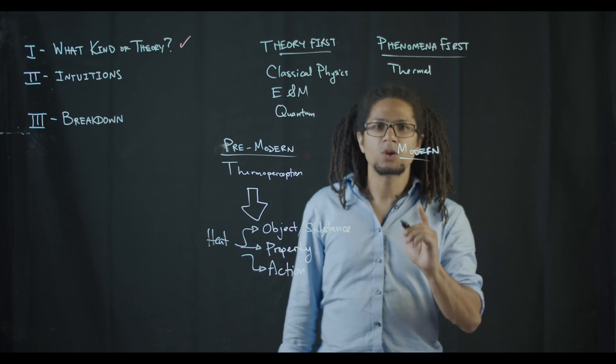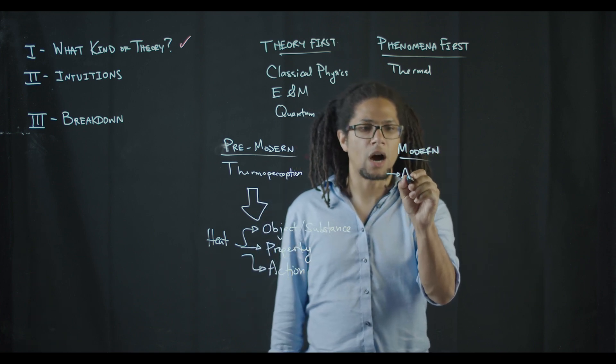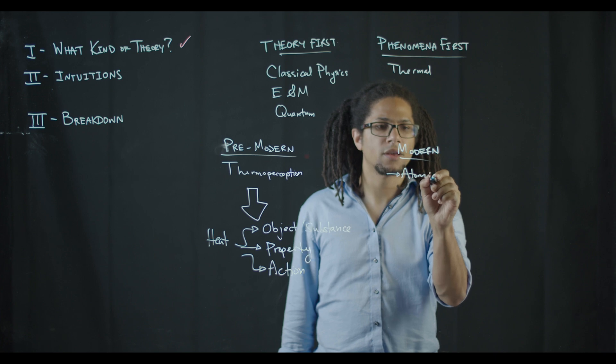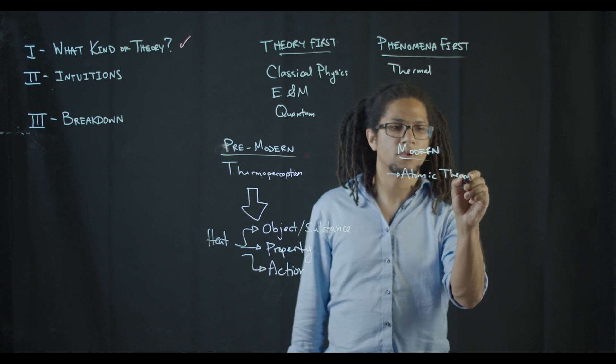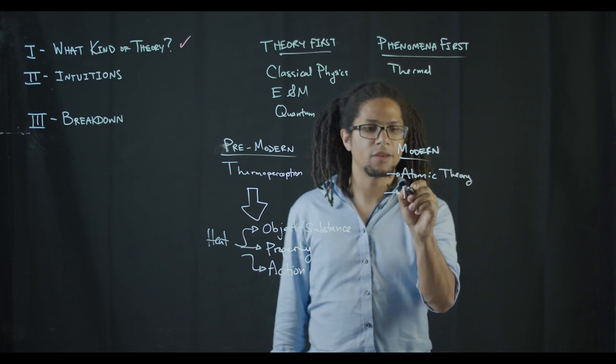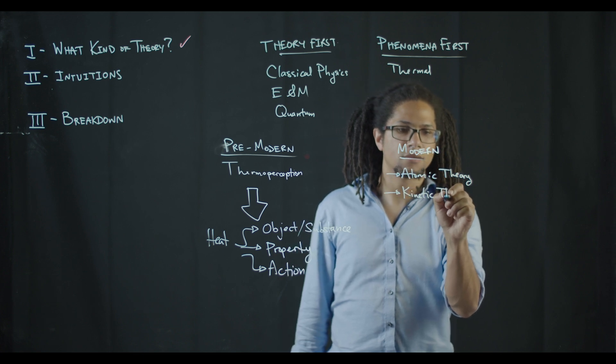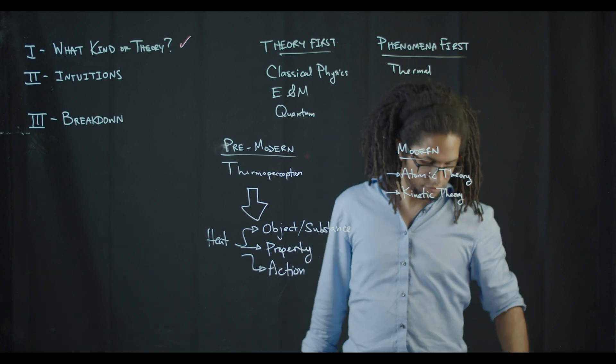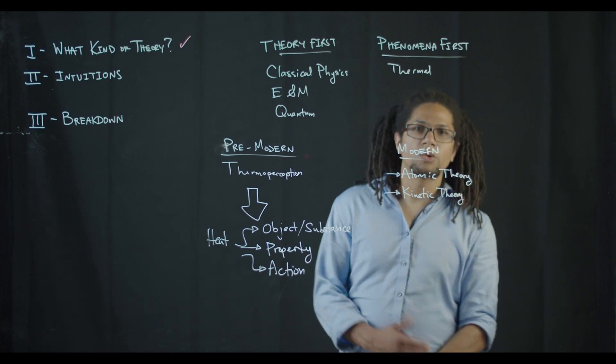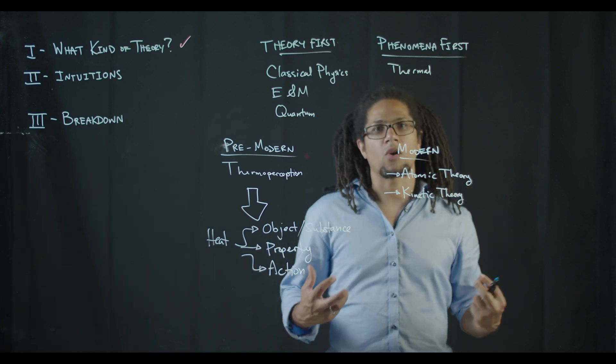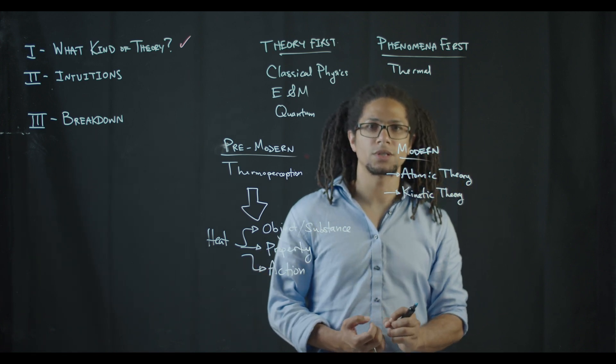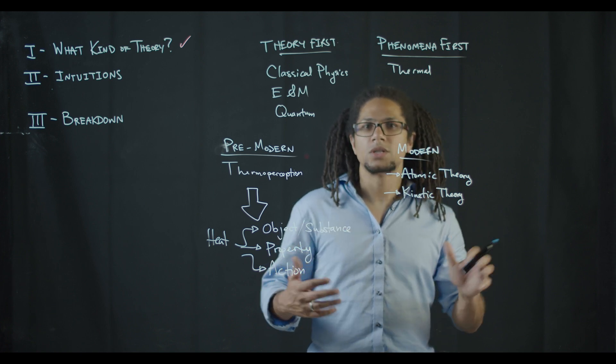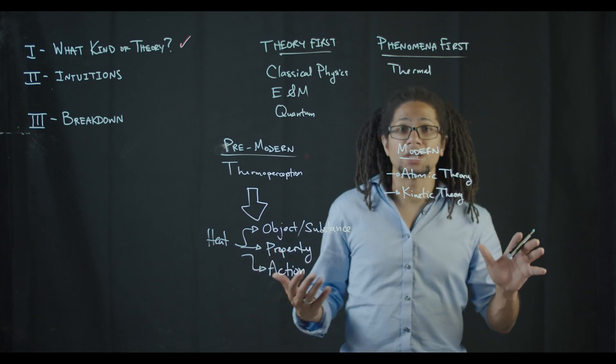I think the two most important things are atomic theory and kinetic theory. So atomic theory is the idea that there are some tiny particles that constitute some or all of what the world is. Those particles are smaller in scale or somehow smaller in level than what we interact with on the day to day.